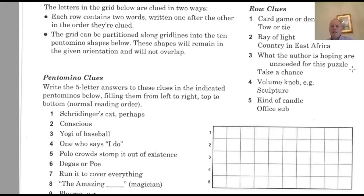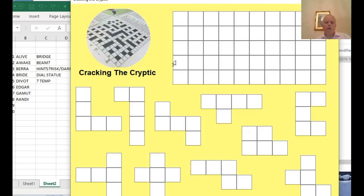What the author is hoping are unneeded for this puzzle? Could be hints. Take a chance, risk or dare. Volume knob, e.g. It's a dial, probably, beginning the fourth row. Sculpture? Could well be statue. And kind of candle and office sub. I think the office sub is a temp. Okay...